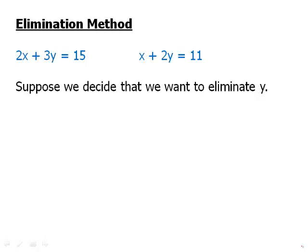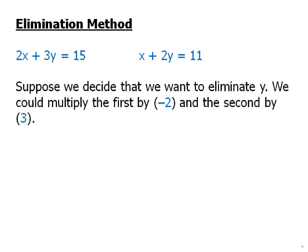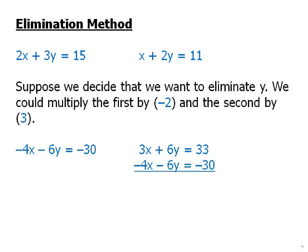We could start with those same equations and instead choose to eliminate y — that would be perfectly valid. If we want to eliminate y, we could multiply the first equation by negative 2 and the second equation by positive 3. The goal is to get the y's to have equal and opposite coefficients. Multiplying gives us negative 6y in one equation and positive 6y in the other, so when we add them they cancel. We solve for x: x equals negative 3. Then we plug in and find the value of y.